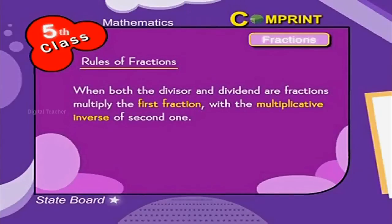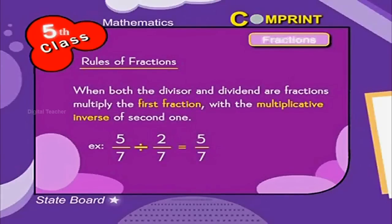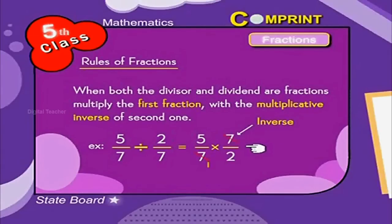Look at the example: 5 by 7 divided by 2 by 7 should be written as 5 by 7 into 7 by 2. If we cancel 7, that becomes 5 by 2.